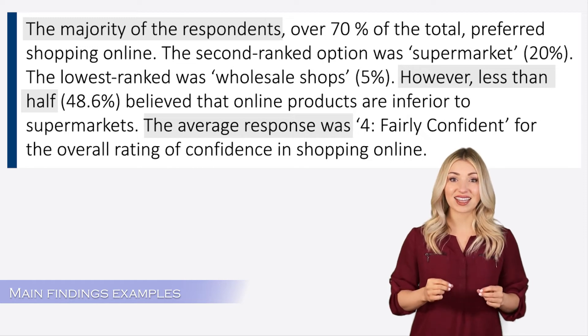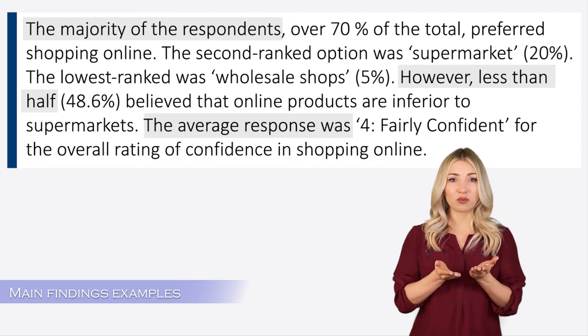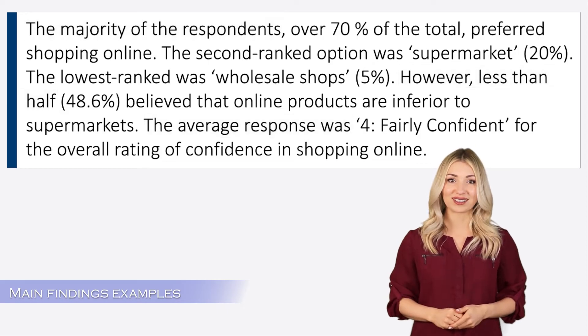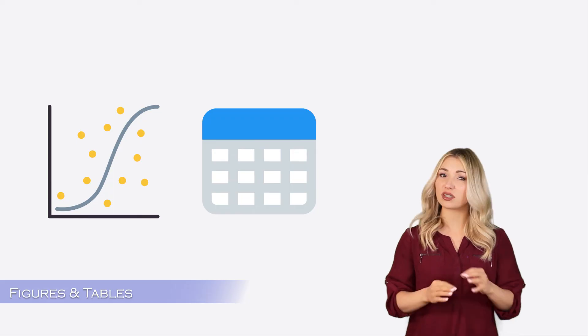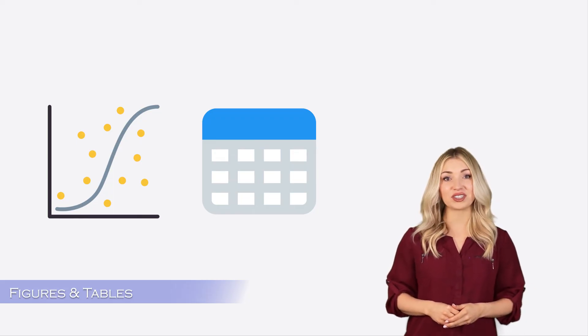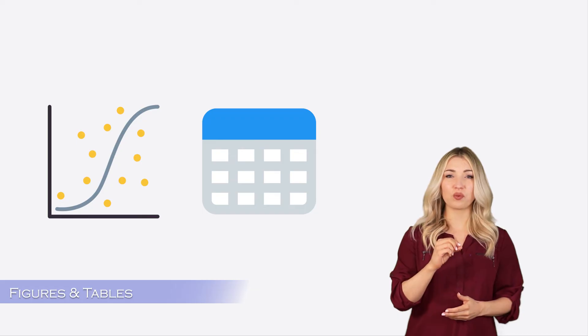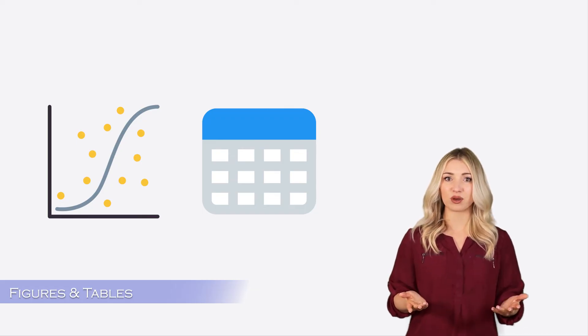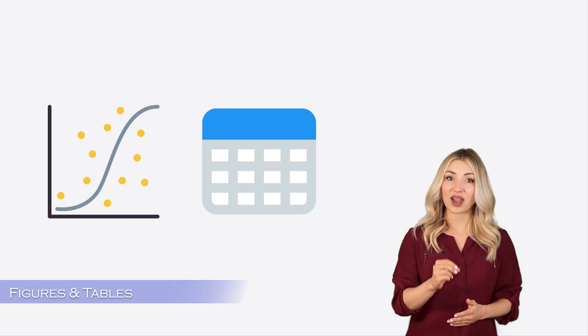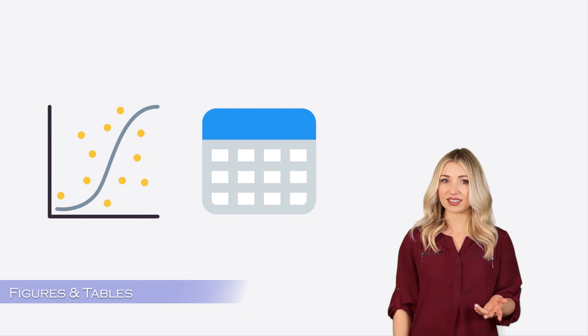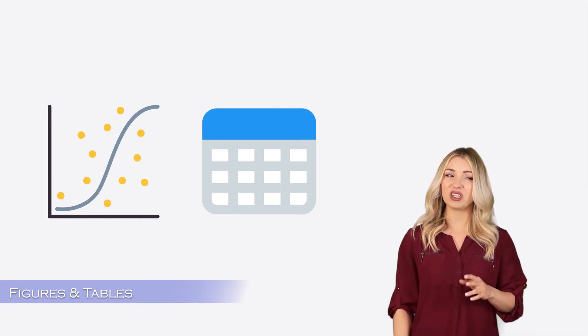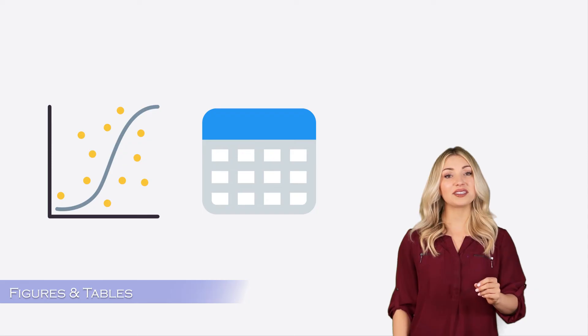Your goal while writing this section should be to present your results as clearly as possible to your readers. One of the important components of the results section is figures and tables. A common question asked by students is when should they present data in figures and tables instead of putting it directly in the text? The best answer is: if you cannot present your data in one or two lines of text, then you should consider putting it in a figure or a table.